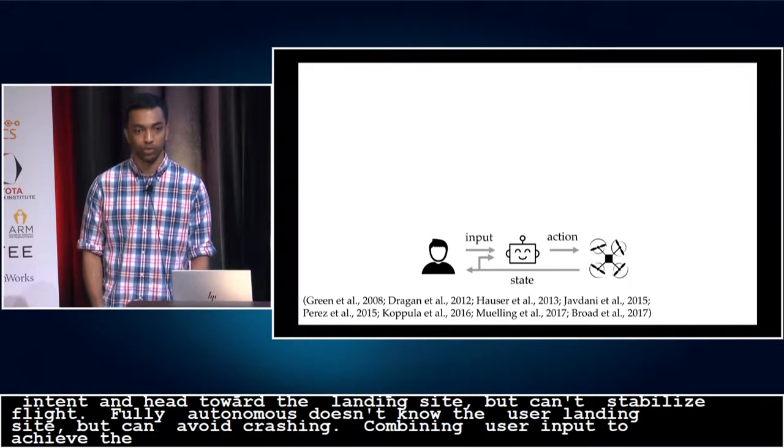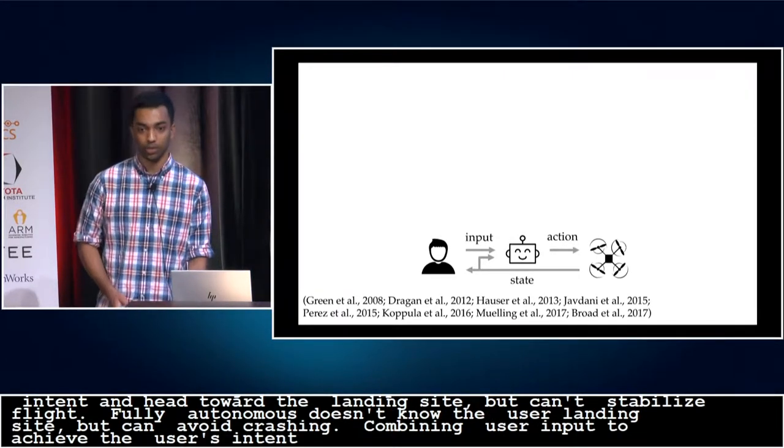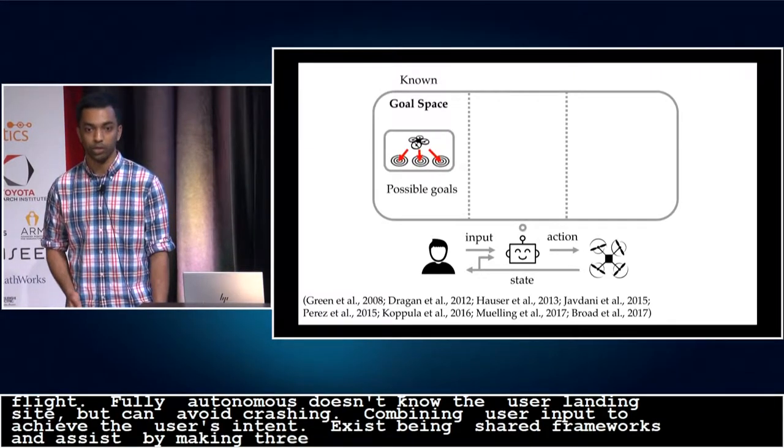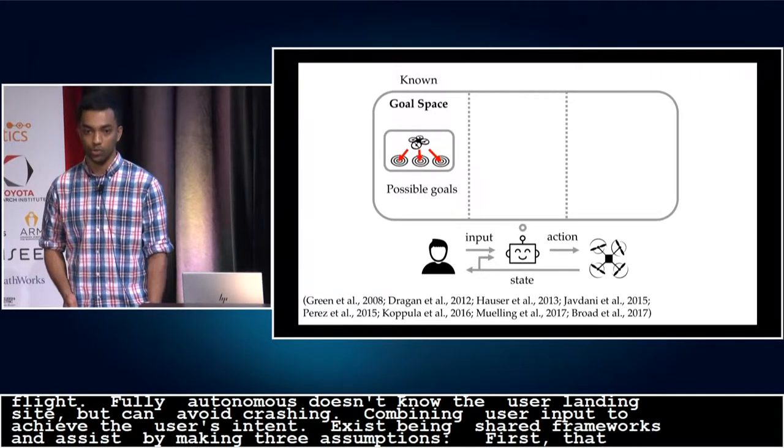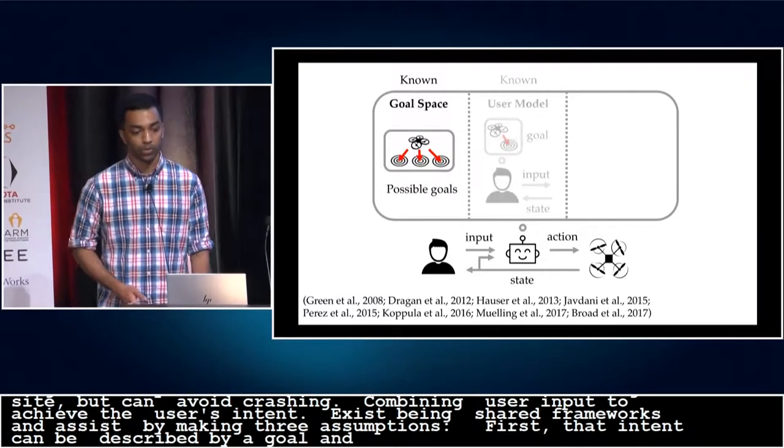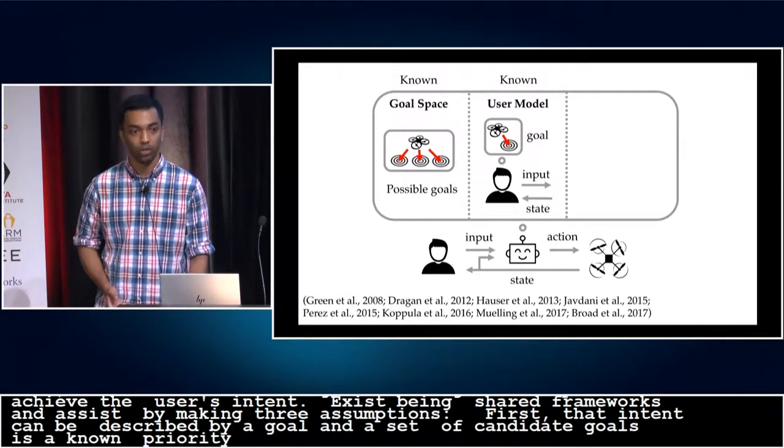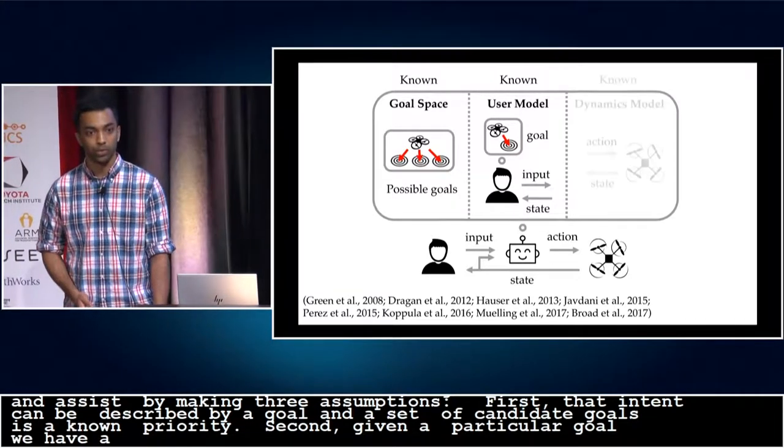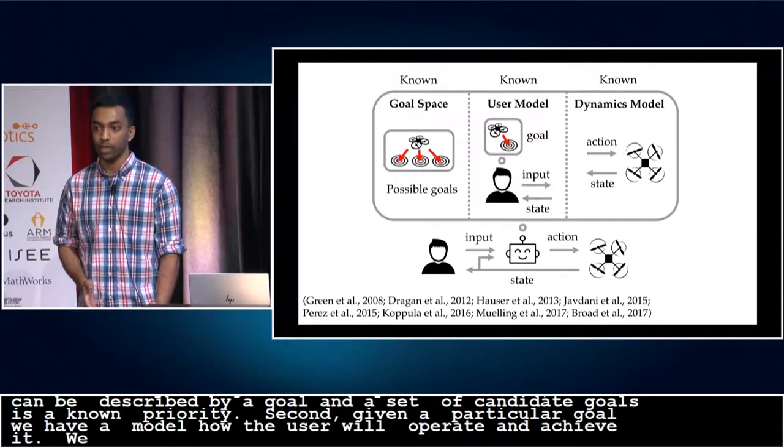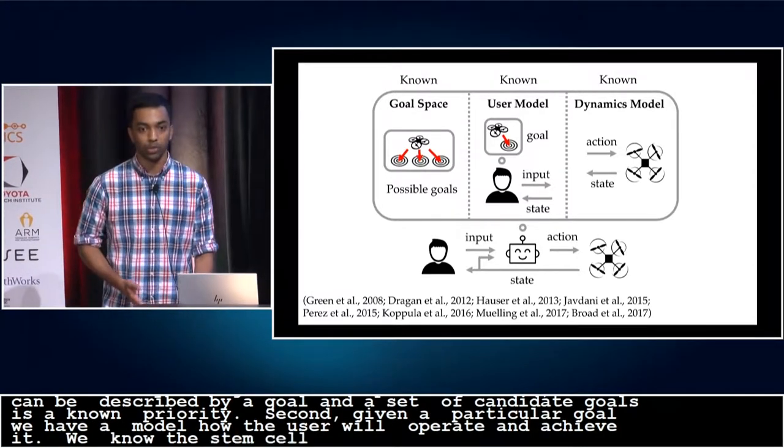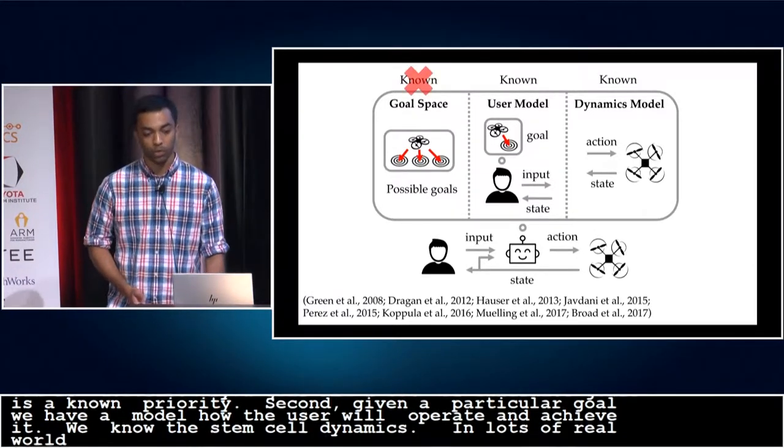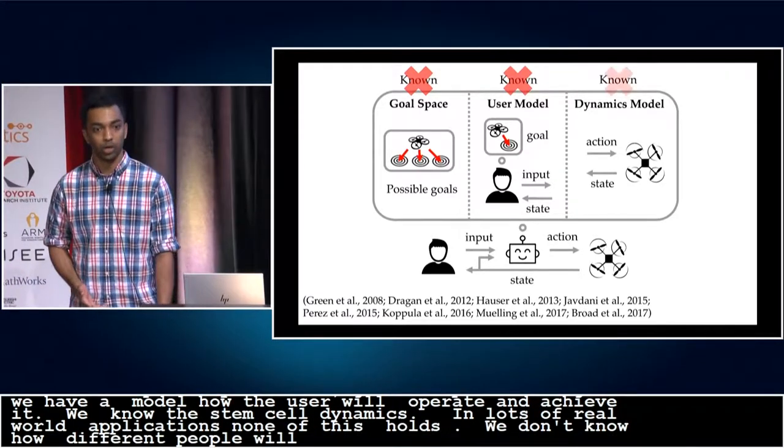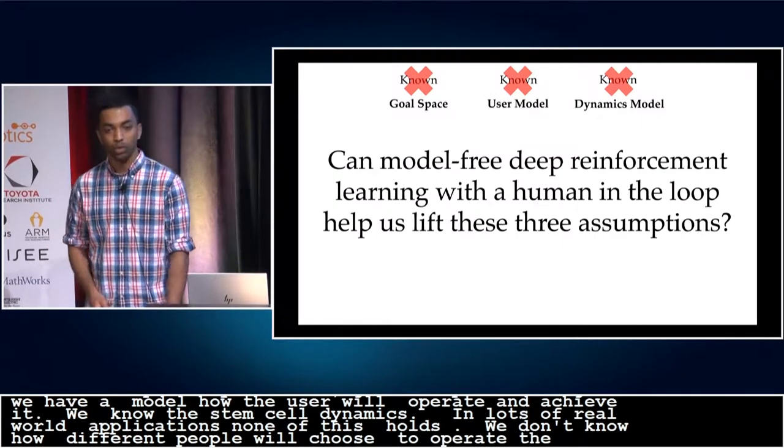Existing shared autonomy frameworks infer user intent and assist by making three fundamental assumptions. First, that intent can be described by a goal, and that a set of candidate goals is known a priori. Second, that given a particular goal, we have a model of how the user will operate to achieve it. And finally, that we know the system's dynamics. But in lots of real-world applications, none of this holds. We don't know how to describe user intent. We don't know how different people will choose to operate the robot. And finally, the physical system may be complex and hard to model.